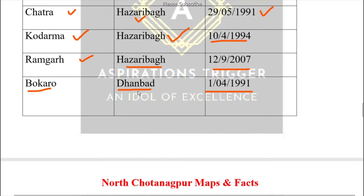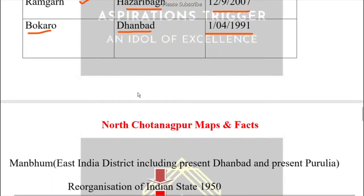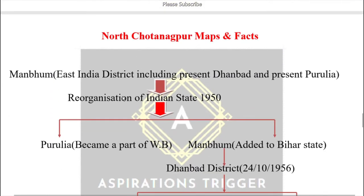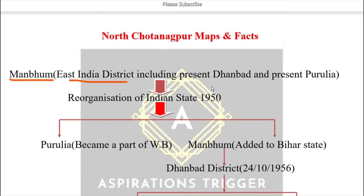Now let me tell you about Dhanbad district. Previously, Dhanbad was part of a district called Manbhum. Manbhum was an East India Company district — during British rule, there was a district named Manbhum, and at that time today's Dhanbad and today's Purulia were both included in Manbhum.